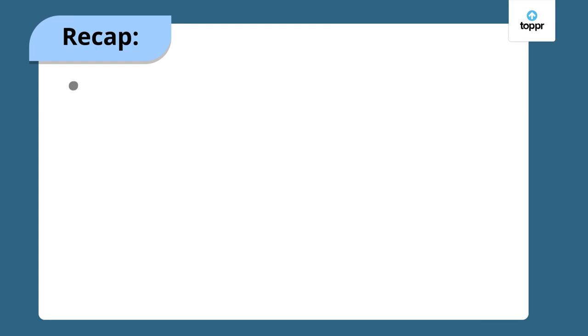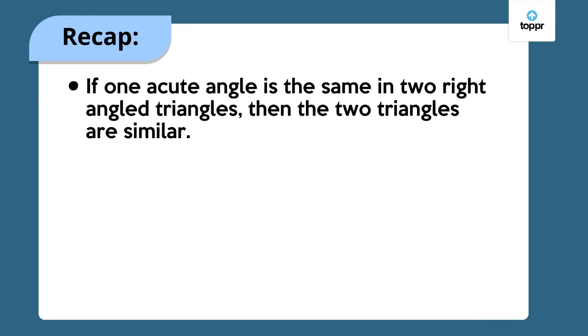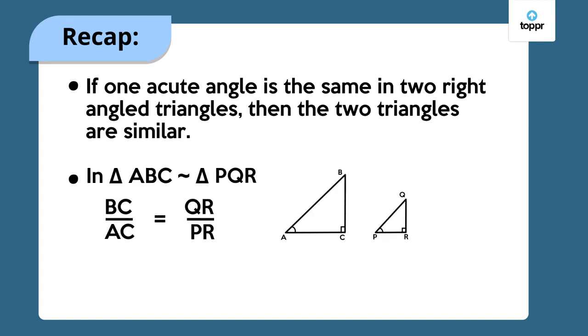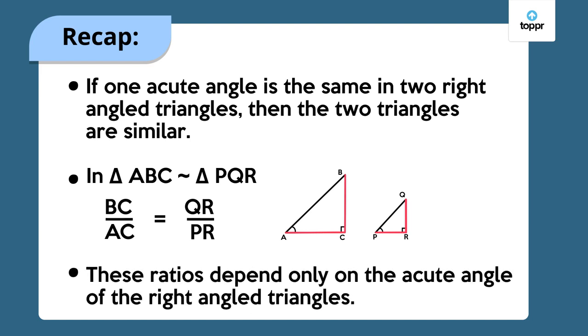So we've learned that when there is one common angle in two right-angled triangles, the two triangles are similar. We've also learned that in similar right-angled triangles, the ratios between the corresponding sides of the triangle are the same. And these ratios depend only on the acute angle of the triangles.